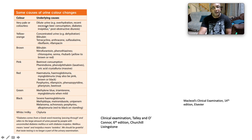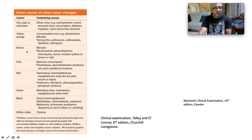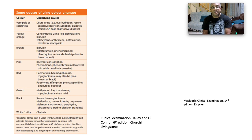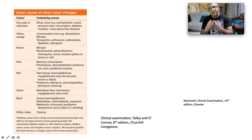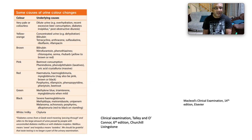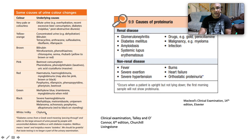Looking at causes of urinary colour changes: very pale or colourless urine indicates dilute urine — the patient may be over-hydrated, have diabetes insipidus, or post-obstructive diuresis. Yellow-orange urine speaks to very concentrated urine — the patient is probably dehydrated, but it could be caused by bilirubin or certain substances. Brownish urine is probably bilirubin, though some antibiotics can cause it. Pink urine may be from beetroot consumption, phenolphthalein, or uric acid crystalluria. Red urine is always concerning for haematuria but can also be due to haemoglobinuria or myoglobinuria. Watch out for other causes like porphyria. If unsure whether a patient is compliant on TB treatment, look at the urine — orange urine probably speaks to rifampicin, meaning the patient is likely compliant. Causes of green, black, and white or milky urine (chyluria) are also noted.